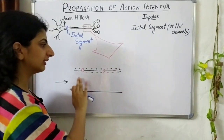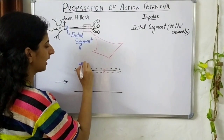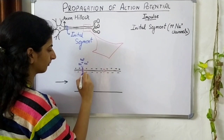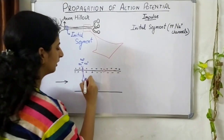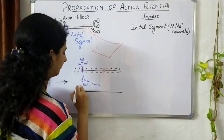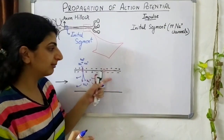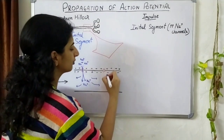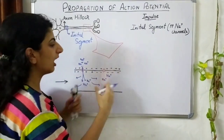Let's say the impulse is received, the threshold value is reached, and the sodium channel opens. These ions will now start coming into the cell. The polarity of the membrane around this channel will change as these ions enter the cell. They are now going to spread, and as they spread, they'll reach the next channel present in this membrane.